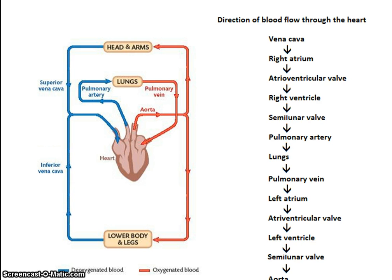To summarise the direction of blood flow: deoxygenated blood enters via the vena cava, fills the right atrium, the AV valve opens and it fills the right ventricle, then contraction of the heart forces blood into the pulmonary artery as the semilunar valve opens. The blood becomes oxygenated in the lungs, then travels back to the heart in the pulmonary vein, fills the left atrium, the AV valve opens and blood fills the left ventricle, and contraction of the heart forces blood into the aorta as the semilunar valve opens.